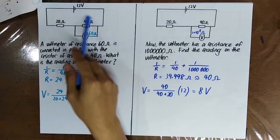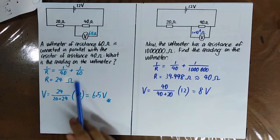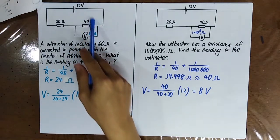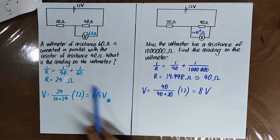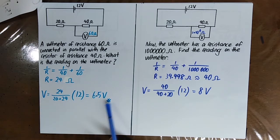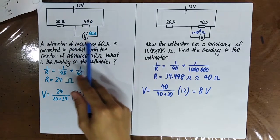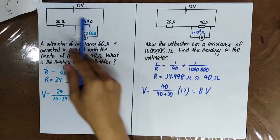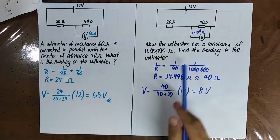First of all, you need to find the equivalent resistance here. Then you use the equation for the potential divider to find the potential difference across here, which is the reading on the voltmeter.